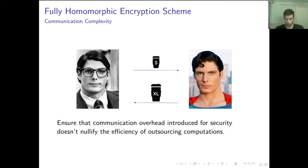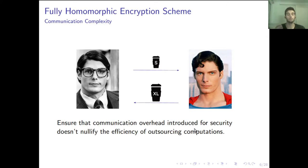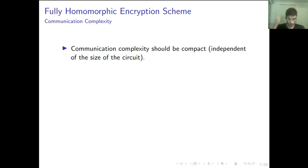Apart from security, we also want to achieve efficiency, especially if we opt to use these schemes in real-life systems. Because of security reasons, the message from the server to the client is bigger, so there is a communication overhead introduced, and we want that to not be too big, so as to not nullify the efficiency of outsourcing the computations in the first place. That's why communication complexity is of very high interest, and we want it to be compact — meaning independent of the size of the circuit used for the computation.